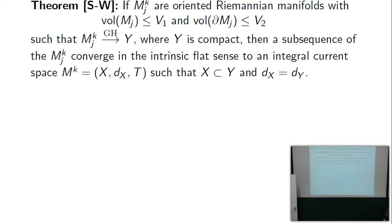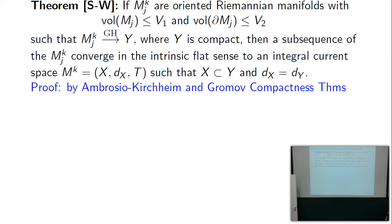If a sequence of oriented Riemannian k-manifolds with volumes bounded above converges in the Gromov-Hausdorff sense to a compact Y, then the intrinsic flat limit sits inside Y with the metric restricted from Y. The proof is easy: Gromov's Compactness Theorem and Ambrosio-Kirchheim's Compactness Theorem together give it instantly. Ambrosio-Kirchheim's compactness says that a sequence of currents with uniform bound on mass in a compact location (with boundary mass uniformly bounded) has a convergent subsequence.